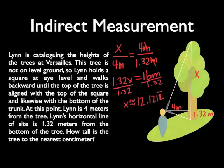So x is going to be about 12.1212. Okay, so that 12 continues on repeating. But remember, we're going to round it. So that's fine. But now, here's the quick question. Is x the height of the tree?